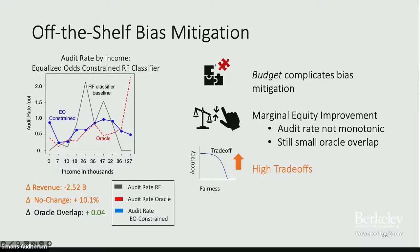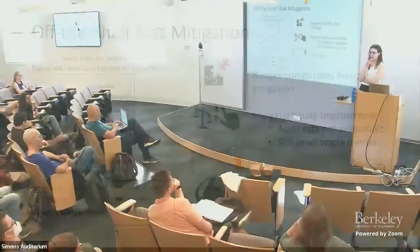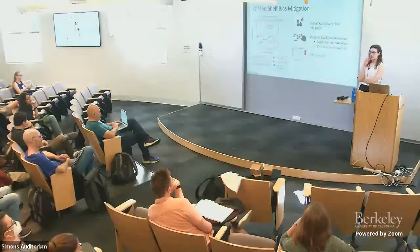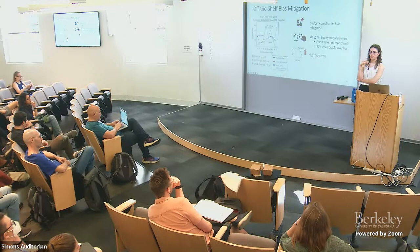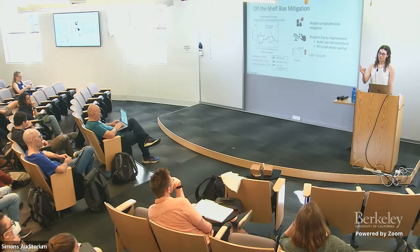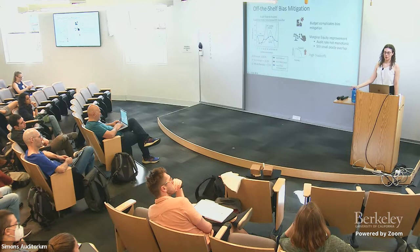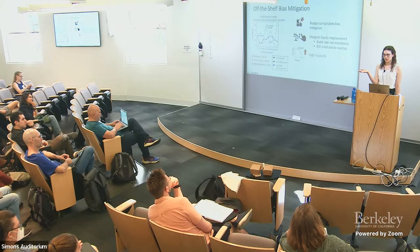One reason equalized odds was attempted is that we showed it would, under certain conditions, enforce monotonicity in audit rate. But it's unclear how to enforce it over just a portion of the population — enforcing it over the whole population didn't carry through to the allocation. To satisfy equalized odds on just the top 0.644%, you would have to keep pulling from further down in the ranking, which creates complications. We also did some other fairness metrics for completeness, but this is the main focus of the presentation.